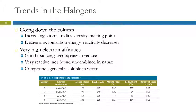The halogens have some trends as well. Going down, we see that the atomic radius increases. Density and melting point increase as well. You can tell that with the melting points by looking at their states at room temperature. The smaller ones are gases and the larger ones are solids.